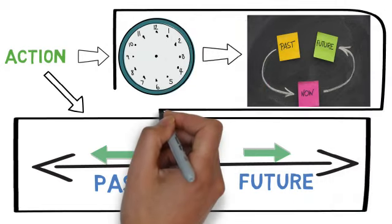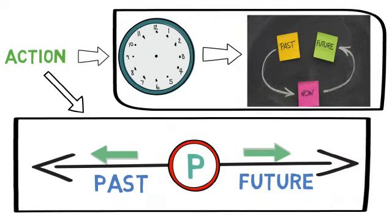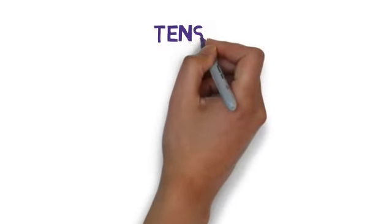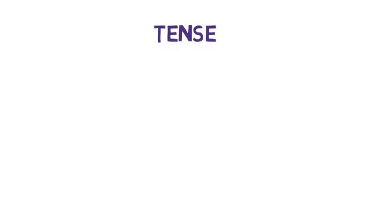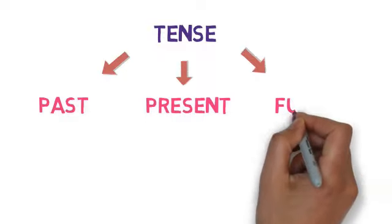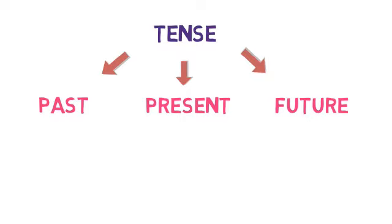Now, as time could be past, present, or future, tenses are divided mainly into three types: past tense, present tense, and future tense. Now, each of these three types have four subtypes.